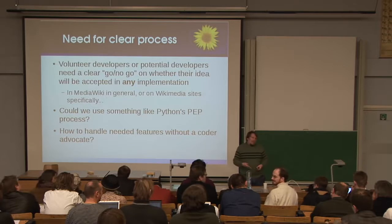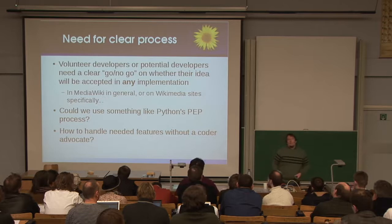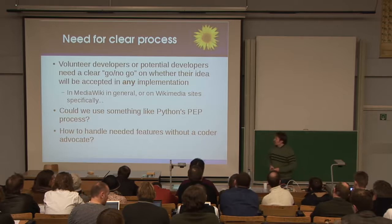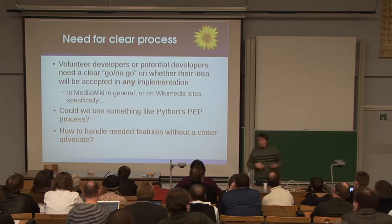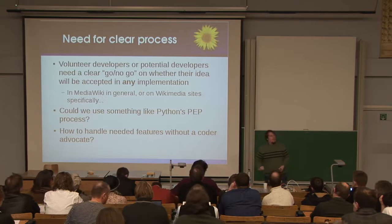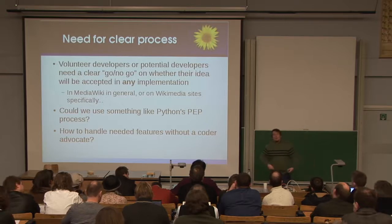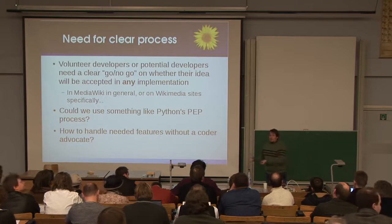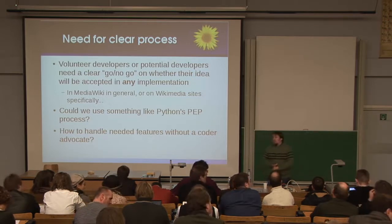So one open question is maybe we need a slightly more formal process — maybe some specific place where people can say 'I want to do this thing, is it okay or not?' Maybe something like the Python extension proposal system that the Python world uses. Is that good, is that bad? I don't know, but it's something we want to be thinking about. There's also a problem of feature ideas or bug fixes that people really want, but those people aren't coders. In the world of open source, most of the time whoever is actually doing the coding wins — if there's something people want but they're not writing the software, no one cares. We want to make sure that things that are important actually get paid attention to.